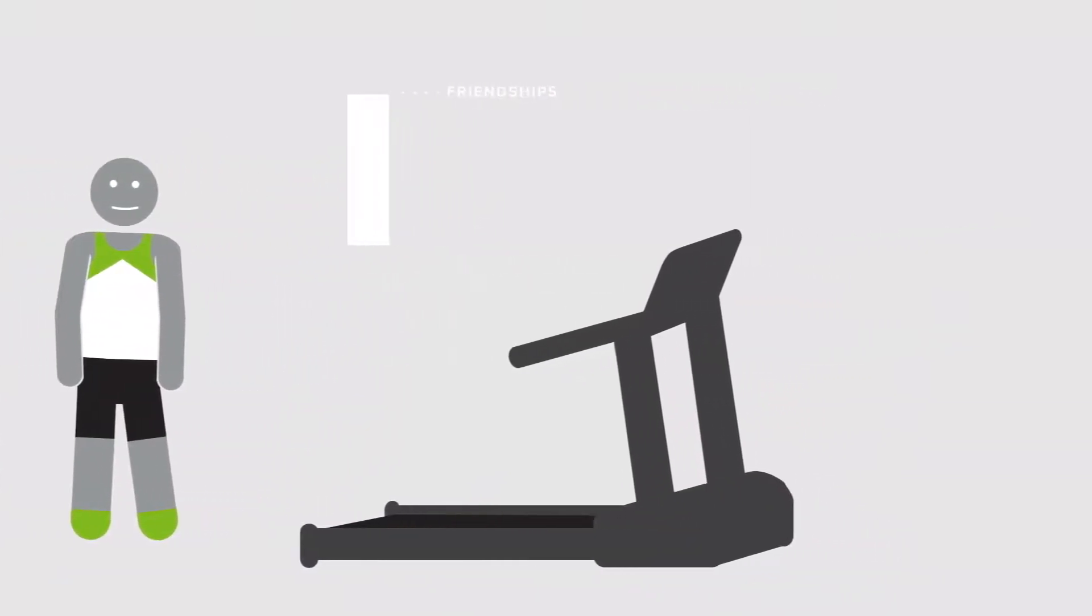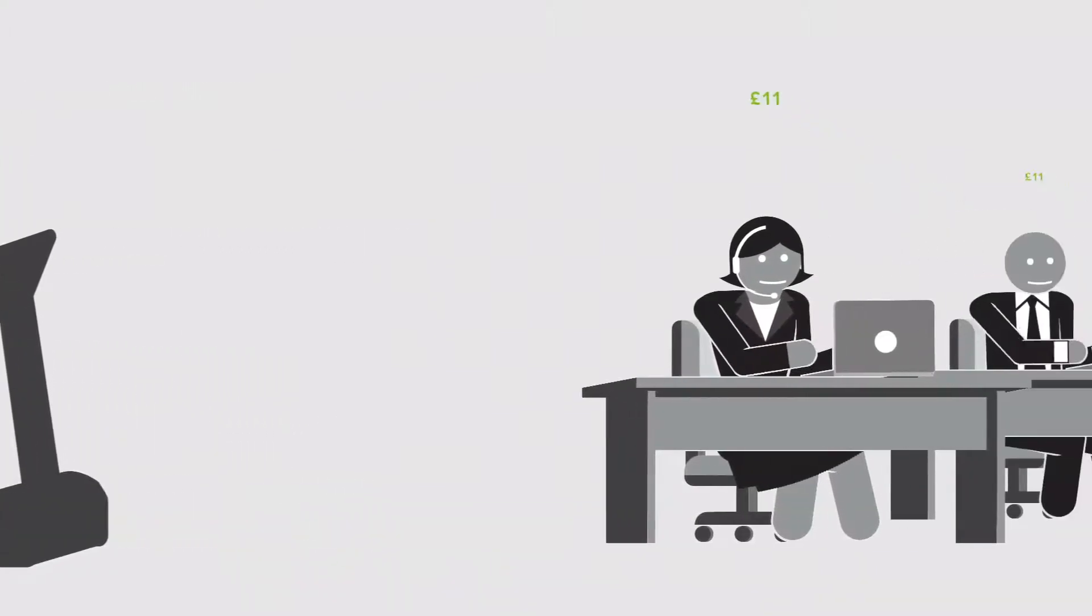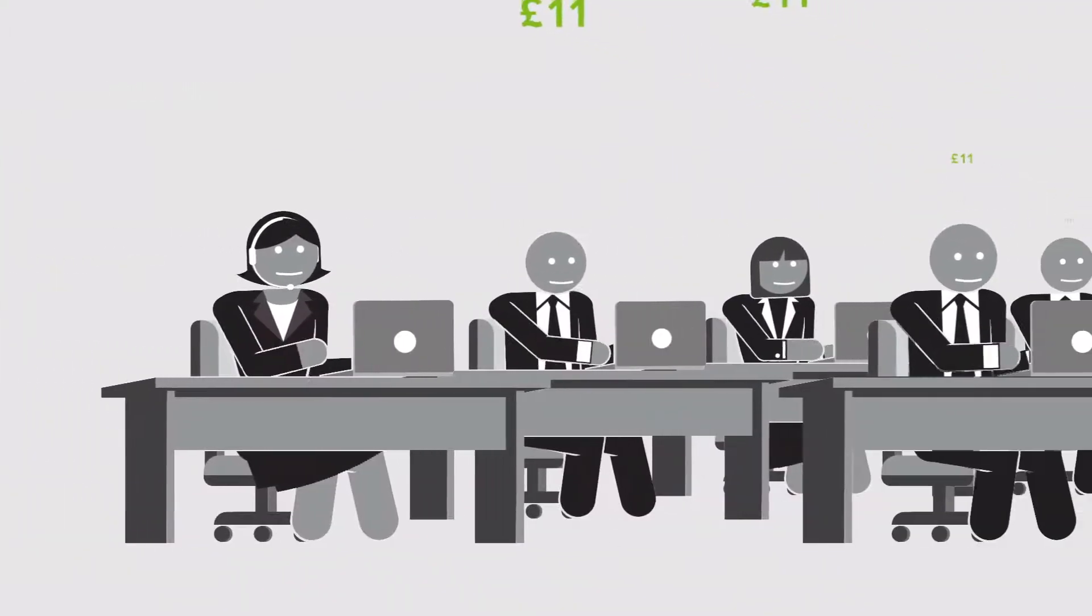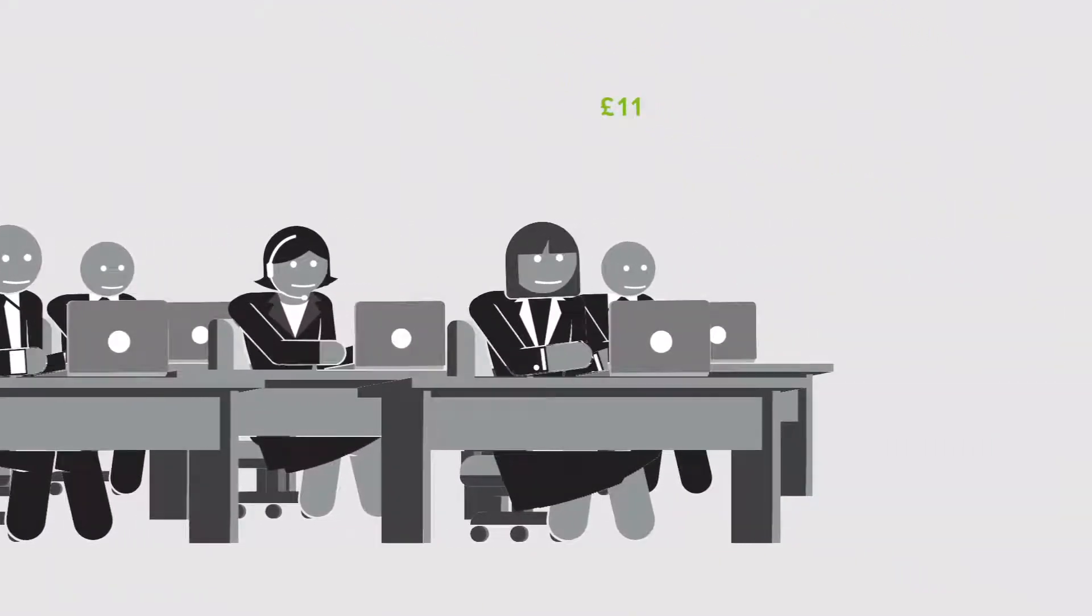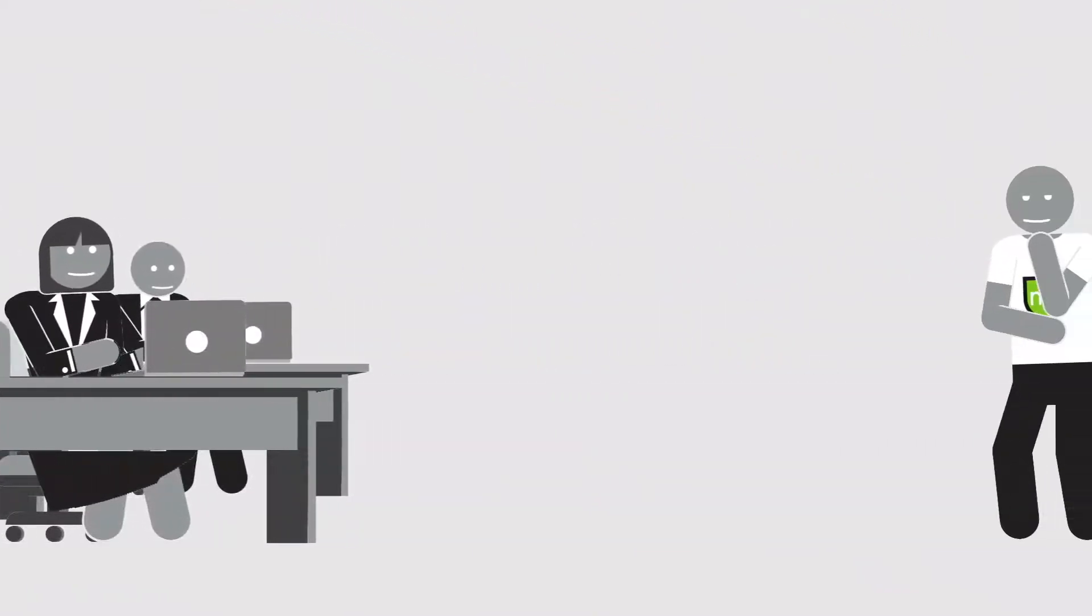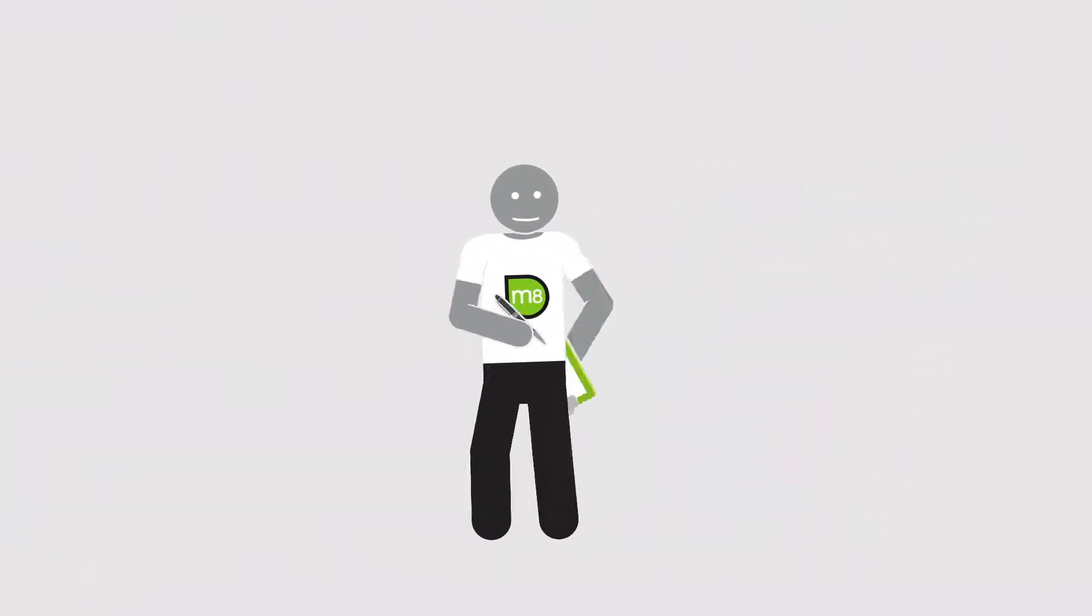The cost to install, manage and maintain an office gym can be as little as £11 per employee per month. This can be taken directly out of their salary or provided as a company benefit. So, a financial model that pays for itself is completely possible.